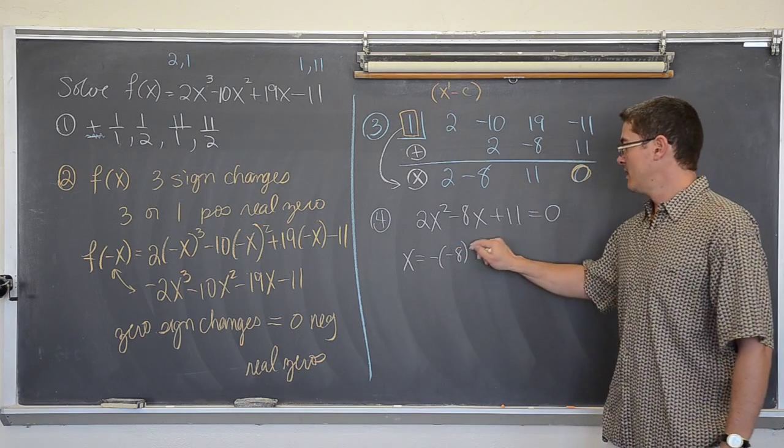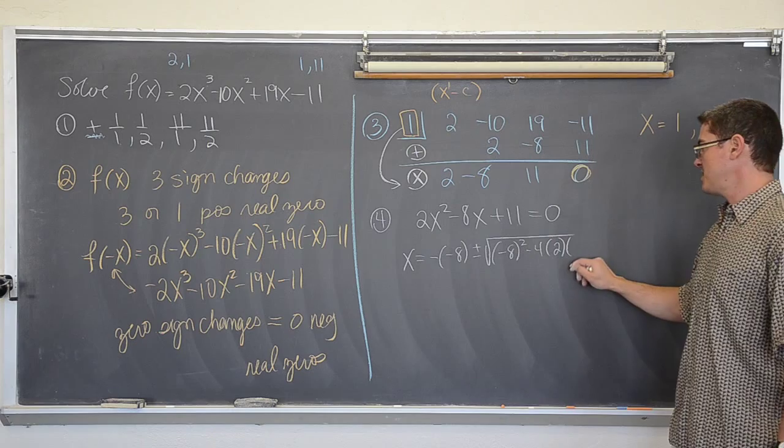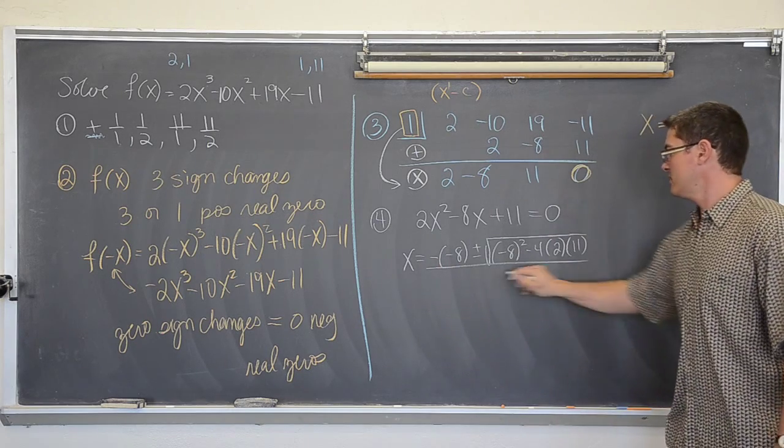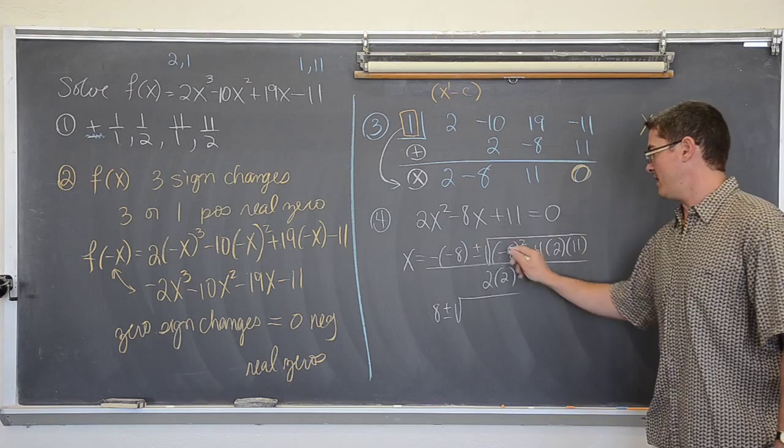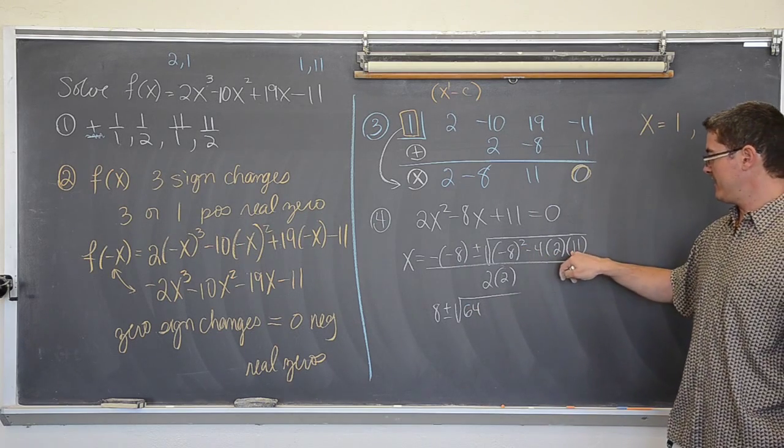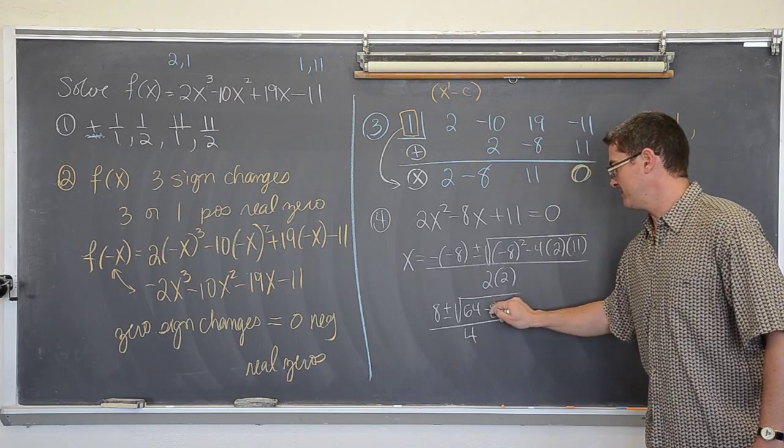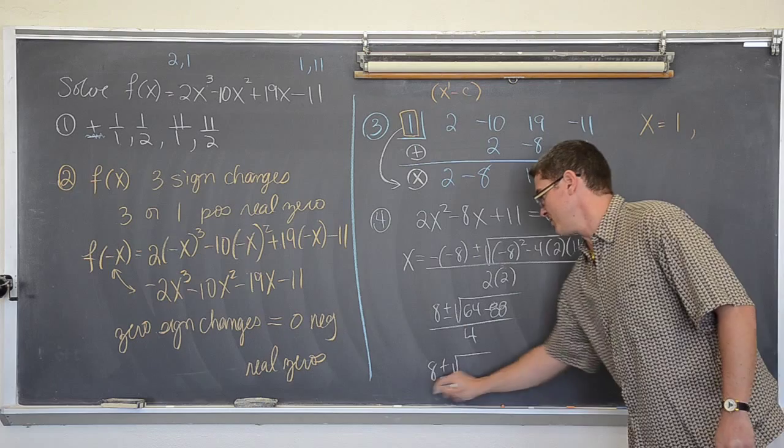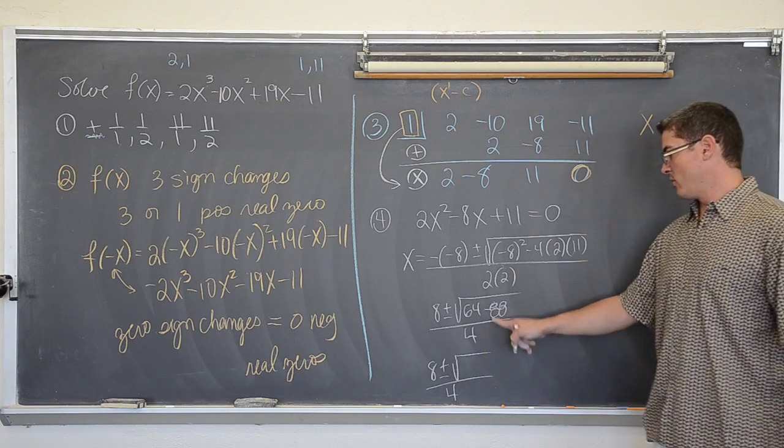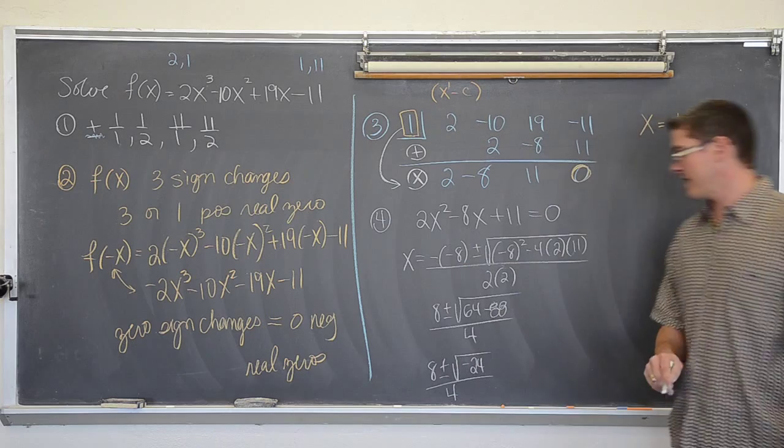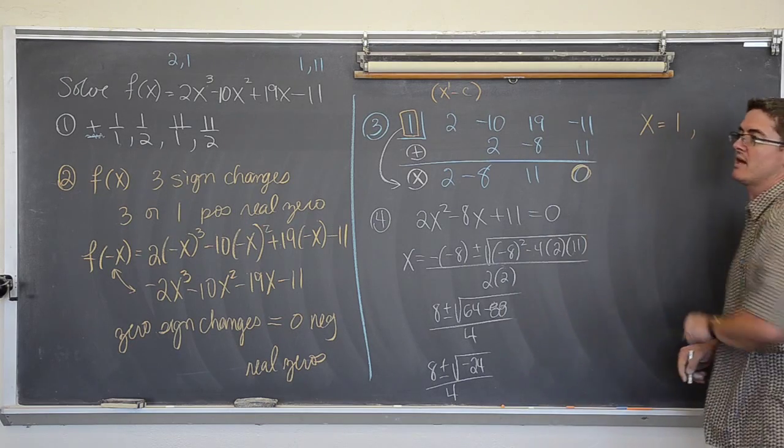So x equals the opposite of b plus or minus the square root of b squared minus 4ac, all over 2a, which is 2. That is going to be 8 plus or minus the square root of 64 minus 88 over 4. That is 8 plus or minus the square root of negative 24. I am going to square root of a negative number, that is imaginary.